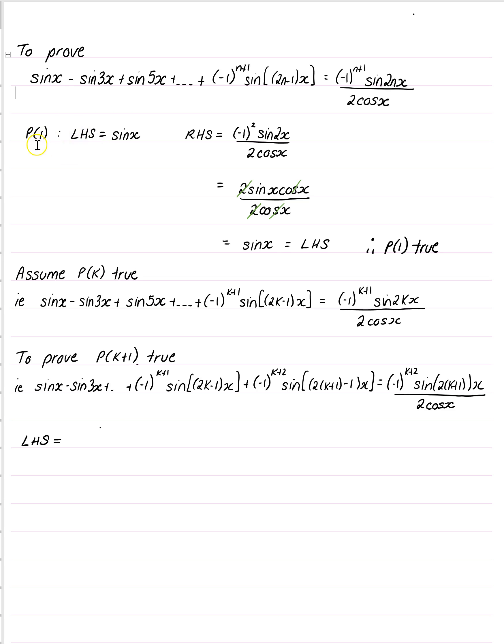We prove that P of 1 is true, so that's our first term here, sine x. We put 1 in the right-hand side, so minus 1 squared is just 1.